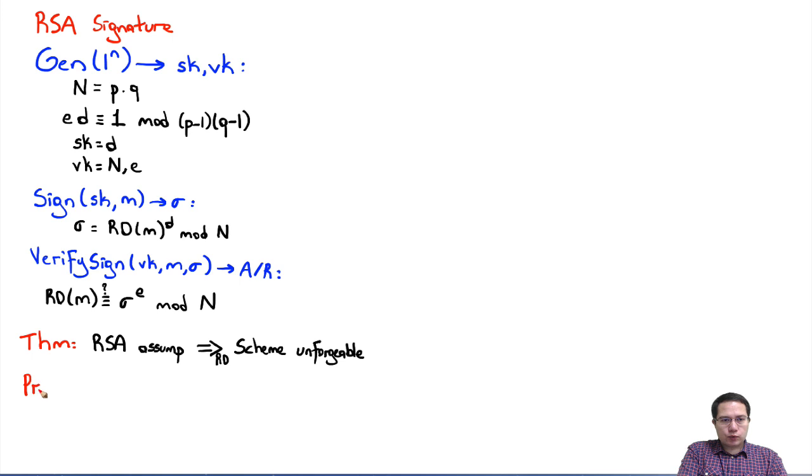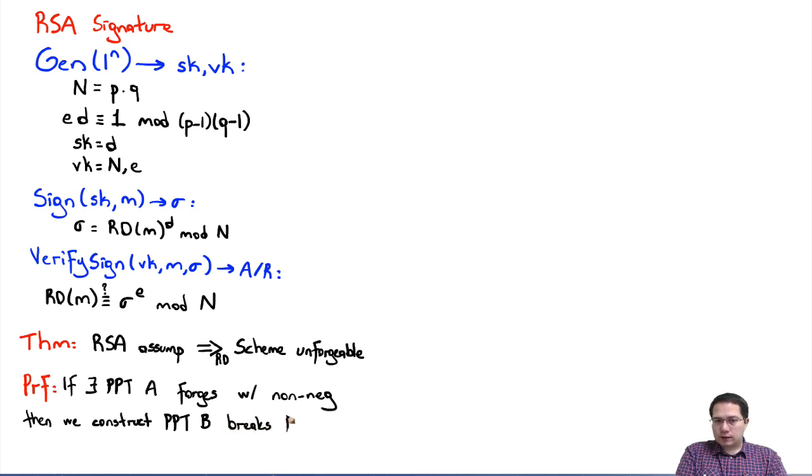As usual, the way we use to prove these theorems are as follows. If there exists a probabilistic polynomial time adversary A that breaks the scheme, meaning forges a signature with non-negligible probability using this scheme, then we could construct another PPT adversary, let's call it B, that breaks the RSA assumption again with non-negligible probability.